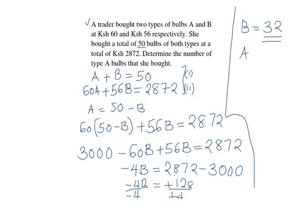So to get type A, we take 50 minus 32 for B.